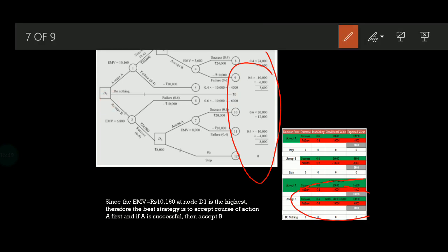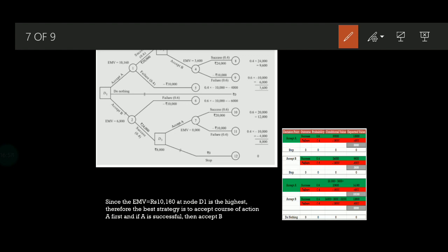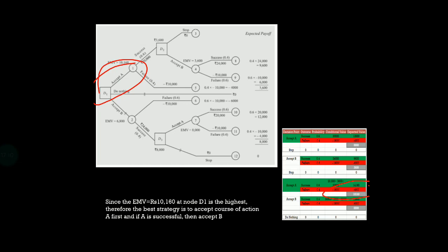Once your table is completed, you identify which is the highest payoff. From the table, you can understand that the highest payoff is coming for accepting A. The EMV is rupees 10,160 at node D1 and is the highest. Therefore, the best strategy is to accept the course of action A first, and if A is successful, then accept B. I hope you are clear on how to draw a decision table. Happy learning. Thank you all.